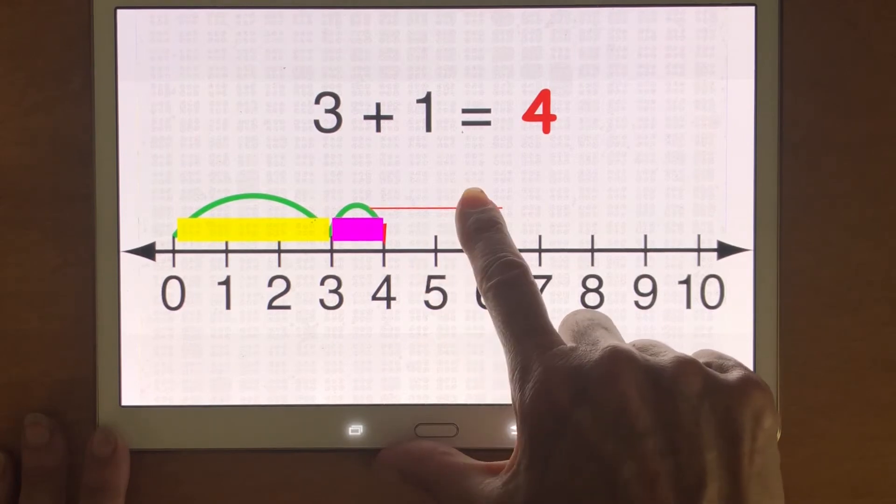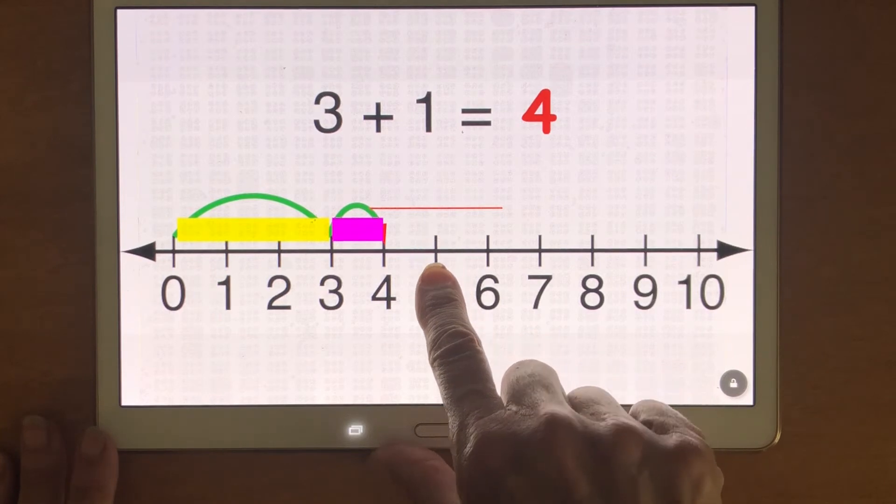If I drag off the number line I'm not gonna feel the haptics or the hum. If I drag below I'm gonna hear the number that I'm on.